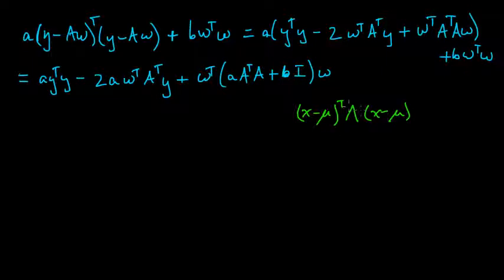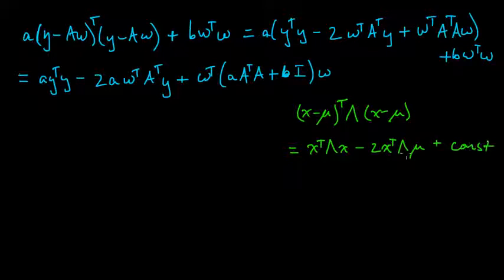And let's multiply this out. So this becomes x transpose lambda x minus 2 mu transpose lambda x. Or actually, let me make that x transpose lambda mu plus mu transpose lambda mu. And that's a constant. So I'll just put const here.